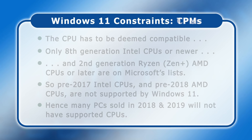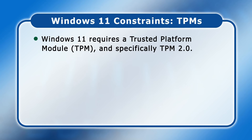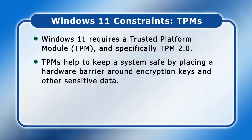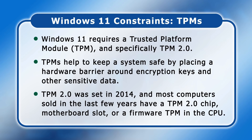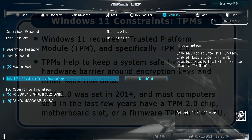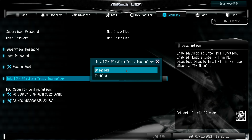Even if your PC has a compatible processor, Windows 11 also requires a Trusted Platform Module, or TPM, specifically meeting the TPM 2.0 specification. TPMs are crypto processors that help keep a system safe by placing a hardware barrier around encryption keys and other sensitive data. The TPM 2.0 standard was set in 2014, and most computers sold in recent years either have a TPM 2.0 chip on the motherboard, a slot for a TPM module, or a firmware TPM in their CPU. If Microsoft lists your processor as compatible, you likely have a TPM available — though you might need a BIOS firmware update to access it, or at least need to turn it on in your BIOS.